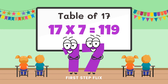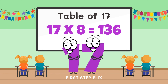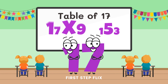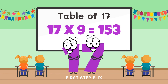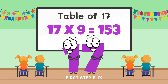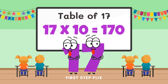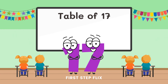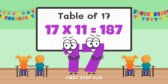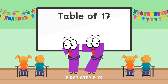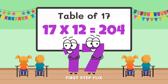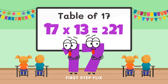17 sevens are 119. 17 eights are 136. 17 nines are 153. 17 tens are 170. 17 elevens are 187. 17 twelves are 204. 17 thirteens are 221.